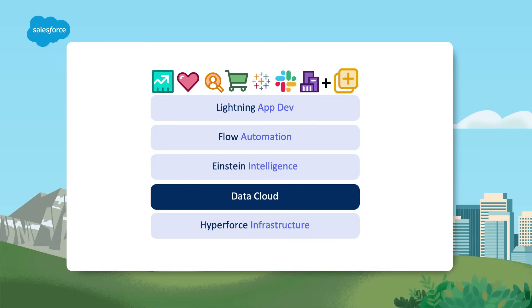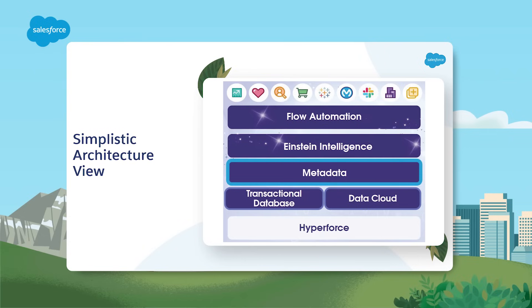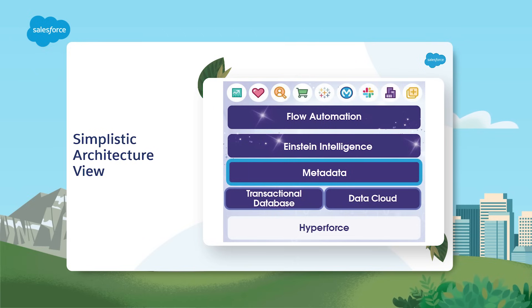As a hyperscale data engine built into Salesforce, Data Cloud connects all your data and your metadata. Its integration into Salesforce's metadata layer means an object in Data Cloud is also an object in Salesforce. When your data resides in Data Cloud, it becomes accessible across various Salesforce applications such as Flow, Reports and Lightning. Essentially Data Cloud acts as the glue that connects your isolated pockets of enterprise data.